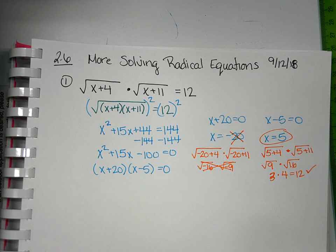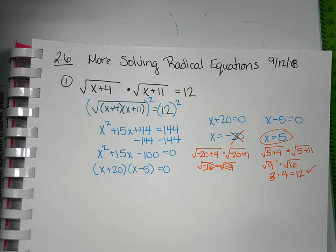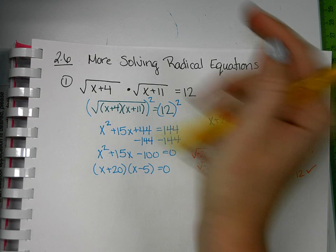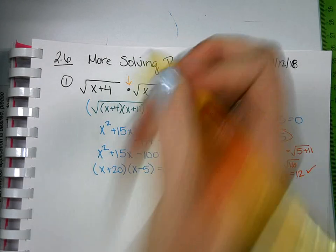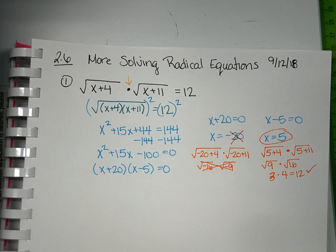This one was a little different because it had us multiplying the radicals instead of adding. If we were adding, we would have had to move one radical over, and then square both sides. If your two radicals are being multiplied, our radical rules state that we can combine them into one radical. So make sure you're identifying the operation. This multiplication is why we were able to do it this way.